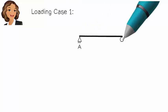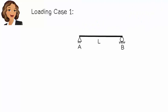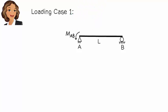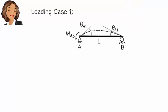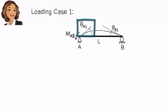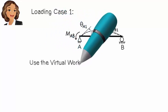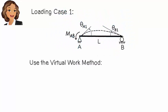Loading case 1: the load is a counter-clockwise moment placed at A. The beam is going to deflect upward, causing a counter-clockwise rotation at A and a clockwise rotation at B. We refer to the moment as M-A-B and denote the end rotations as theta-A1 and theta-B1. We can use the virtual work method to calculate these rotations.